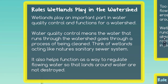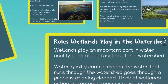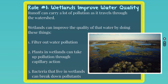Wetlands also help regulate the flow of water through the watershed, so water isn't going to end up going too fast — once it hits the wetland, it slows down. The first role you should remember is wetlands improve water quality. Runoff can carry a lot of pollution as it travels through the watershed. Wetlands improve water quality by doing three things: one, it filters out the pollution; two, the plants in the wetlands can take up that pollution through capillary action; and three, the bacteria that live in the wetlands can also break down those pollutants.